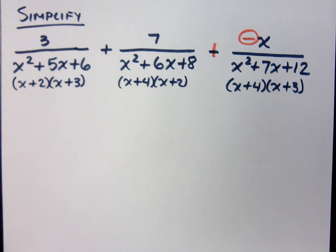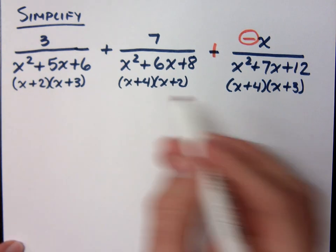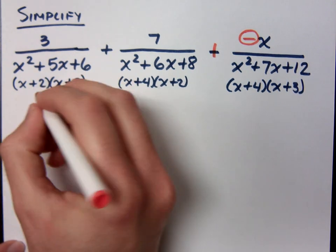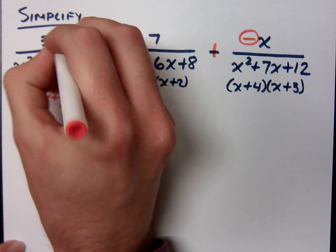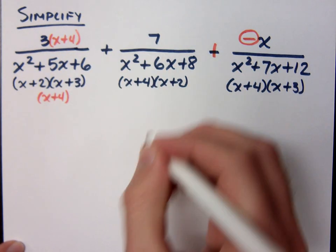We've got to put in those missing factors. So what's missing here in this first guy that everybody else has? x plus 4. We're missing the factor of x plus 4, so put that in the denominator and the numerator. What is the middle guy missing? x plus 3. He is missing the x plus 3.